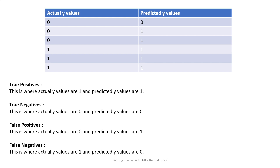Assume that the actual Y values are your Y testing dataset, which has, let's say, three zeros consecutively. This is a binary classification problem where you have a yes and no system, and you apply a machine learning model — it can be logistic regression, k-nearest neighbor, support vector machine, decision tree, random forest, or any model. What you are particularly interested in is the predicted Y values. The actual values come from the dataset and you're trying to predict a set of values using your model.